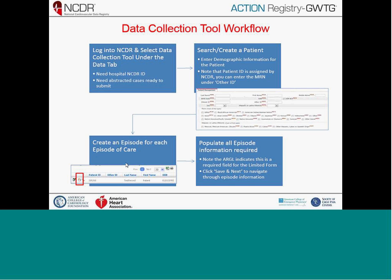Going to the data collection tool under the data tab, you'll enter cases you've already extracted from your medical record. You need to search and create a patient and enter demographic information. The patient ID is assigned by NCDR, so do use the Other ID field to track your hospital medical record number. From there, you'll see the patient populate, select the three icons, and use that middle icon — the piece of paper with the red asterisk — to create an episode of care.